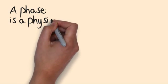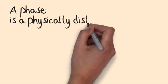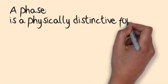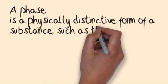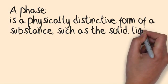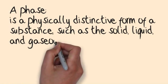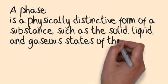A phase. This is a physically distinctive form of a substance, such as the solid, liquid or gaseous states of ordinary matter.